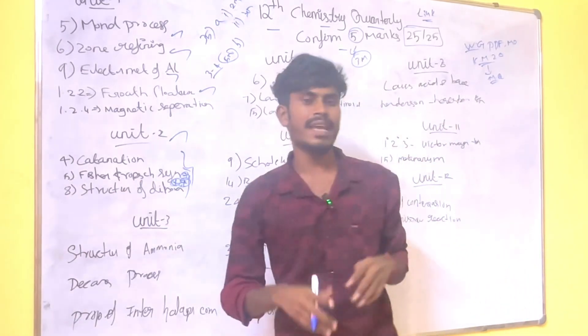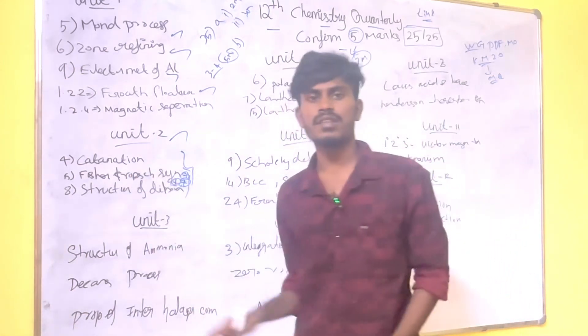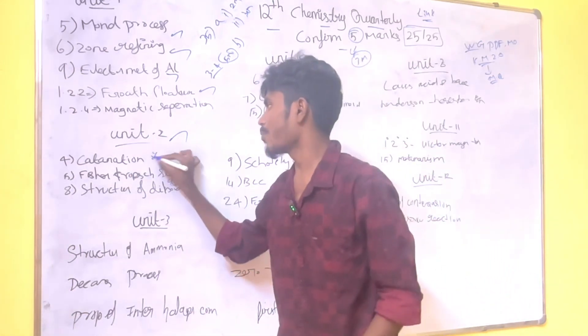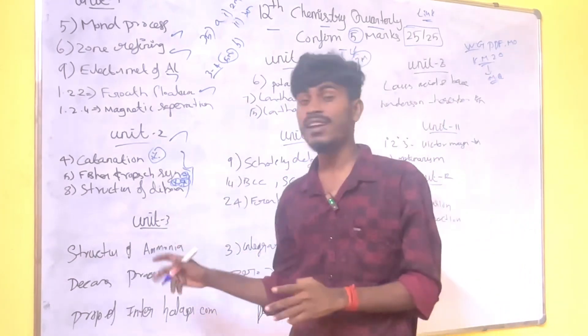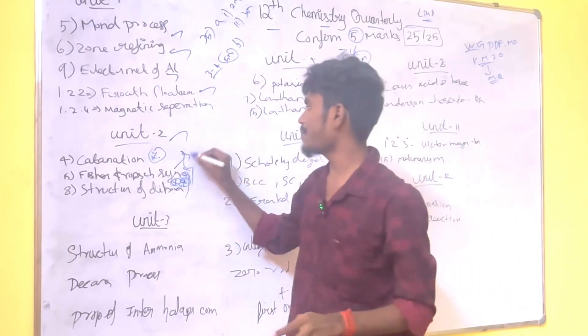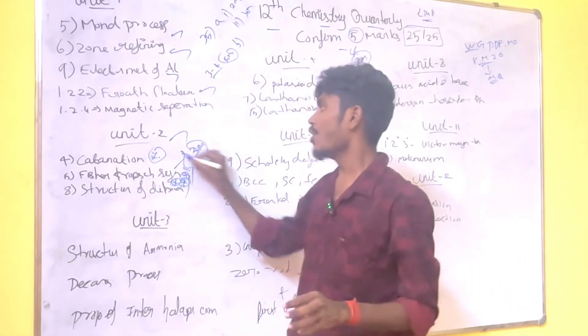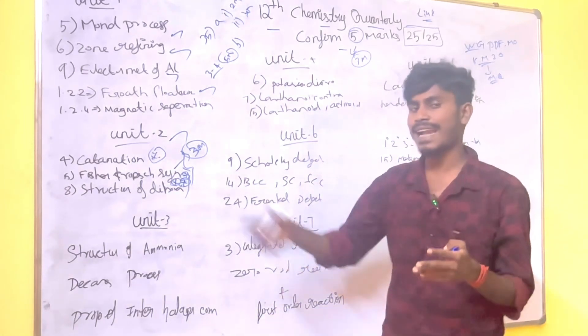The structure of diborin is very important. The catenation property of allotropes is very important. Then there is phosphorus synthesis. It is important but not 5 marks. Most of the times, it is only 3 marks. Note that. Phosphorus synthesis, the structure of diborin, this is the catenation property.